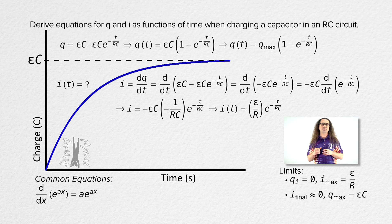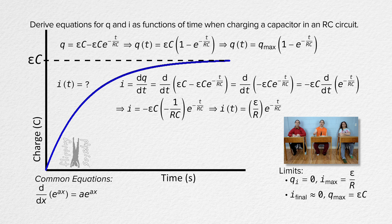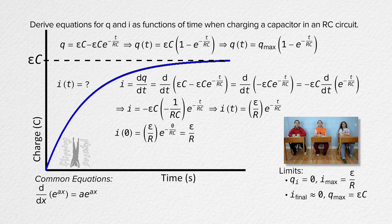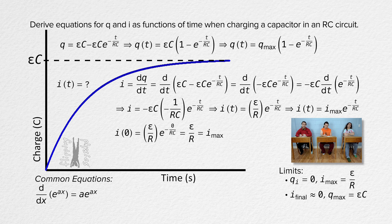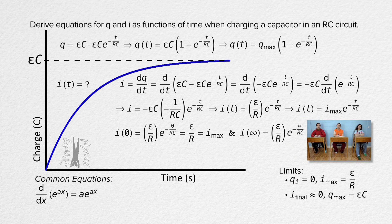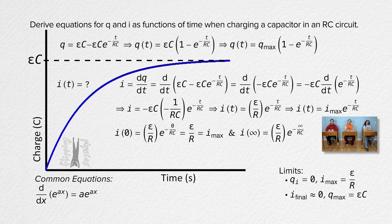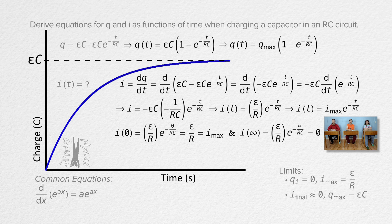Determining the limits of the current: when we substitute zero in for time t, we get e to the negative zero, which equals one. So the initial current equals EMF divided by resistance, which is the maximum current, and we substitute current maximum back into the equation. Substituting infinity in for time, e to the negative infinity equals zero, so the current in the RC circuit is zero after a long time.